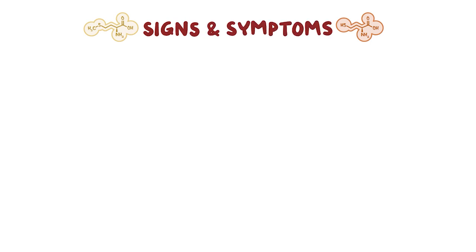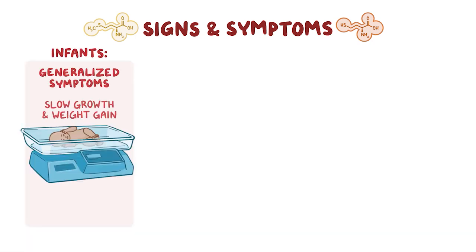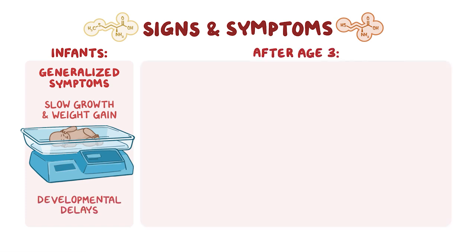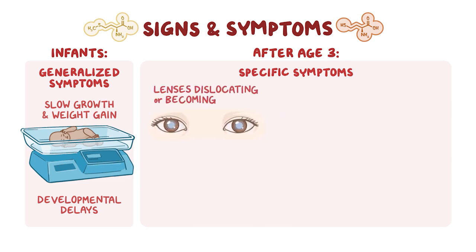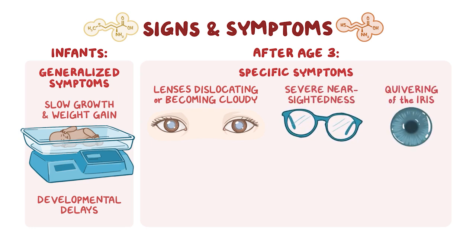This buildup of methionine and homocysteine amino acids can cause a wide range of symptoms which vary by severity and age. Infants experience generalized symptoms such as slow growth and weight gain, as well as possible developmental delays. After age 3, more specific symptoms begin to appear. Symptoms in the eyes may include the lenses of the eye dislocating or becoming cloudy, severe nearsightedness, and quivering of the iris.